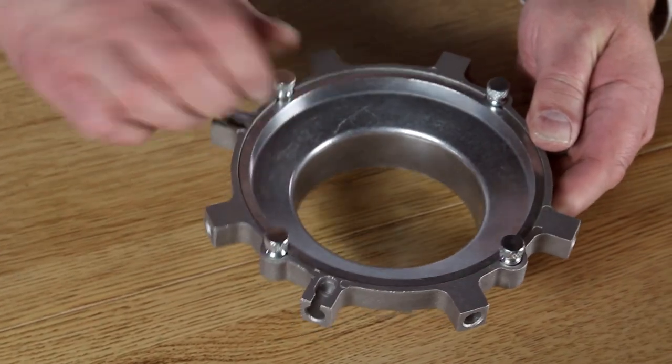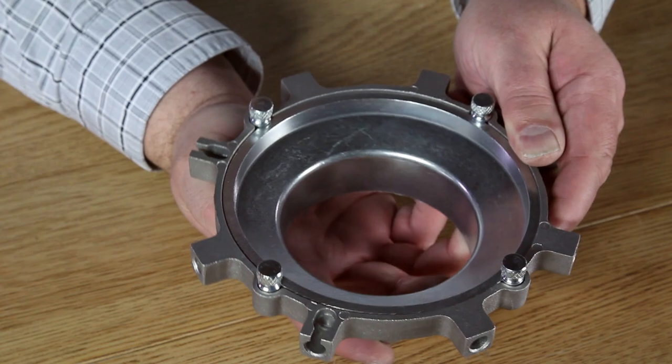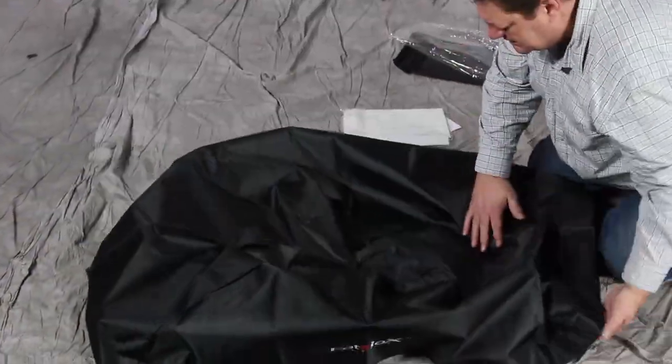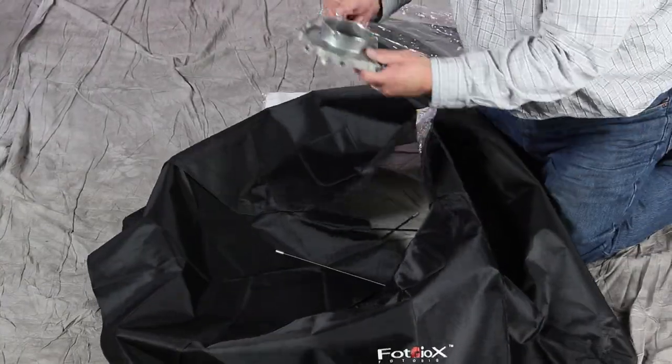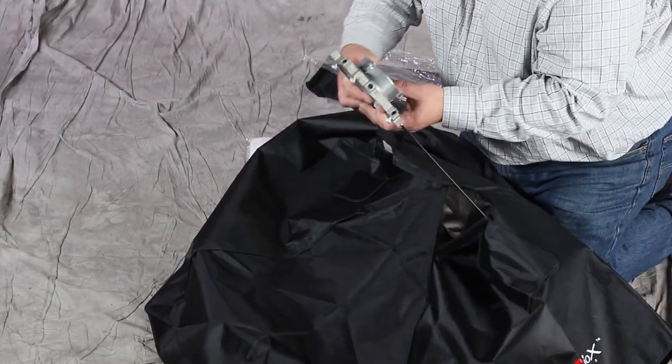Loosen the screws on the speedring slightly so you'll be able to rotate the softbox after it's mounted on a light. Now turn the softbox over. Take the speedring, long end facing up, and slot the four rods into every other rod mounting hole.